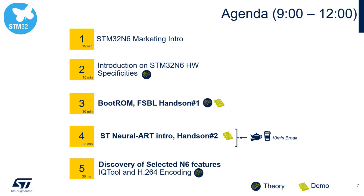Then I'm going to switch to my colleague Nicolas for the Neural-ART intro, which is our proprietary NPU integrated in the N6, and we are going to do a hands-on with that tool. In the last part, we're going to introduce something that is not specifically AI-related but is present on the STM32N6 silicon: the IQ tool, which is our graphical tool to handle a camera pipeline, and we will also discover how to use H.264 hardware encoding integrated as a peripheral on STM32N6.